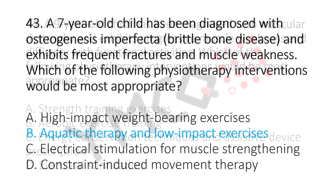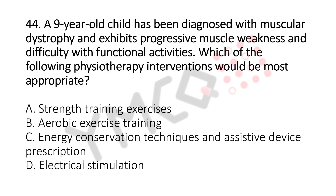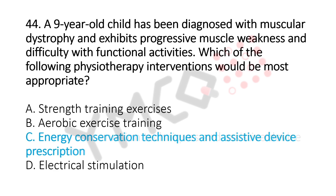Now let's move to question number 44. A 9-year-old child has been diagnosed with muscular dystrophy and exhibits progressive muscle weakness and difficulty with functional activities. Which of the following physiotherapy interventions would be the most appropriate? Option A, strength training exercises. Option B, aerobic exercise training. Option C, energy conservation techniques and assistive devices prescription. Option D, electrical stimulation. And the answer is Option C, energy conservation techniques and assistive devices.